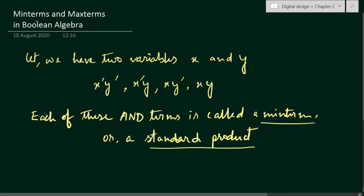So you have understood what is a minterm. If we have two input variables x and y, then x bar y bar, x bar y, x y bar, and x y are the minterms.